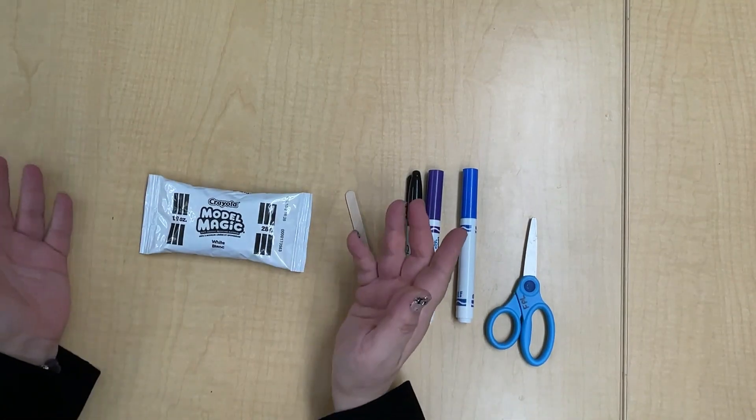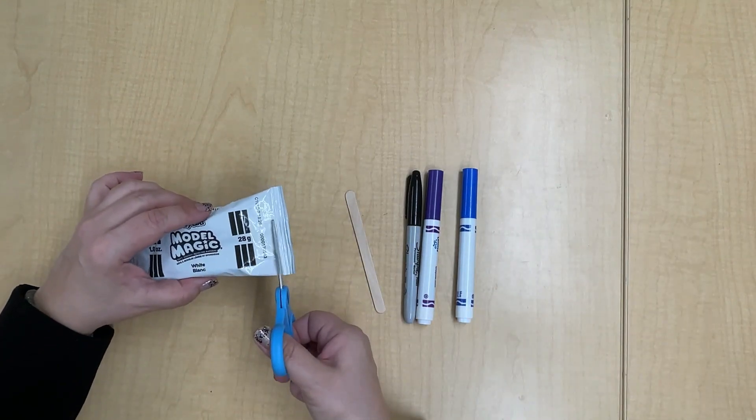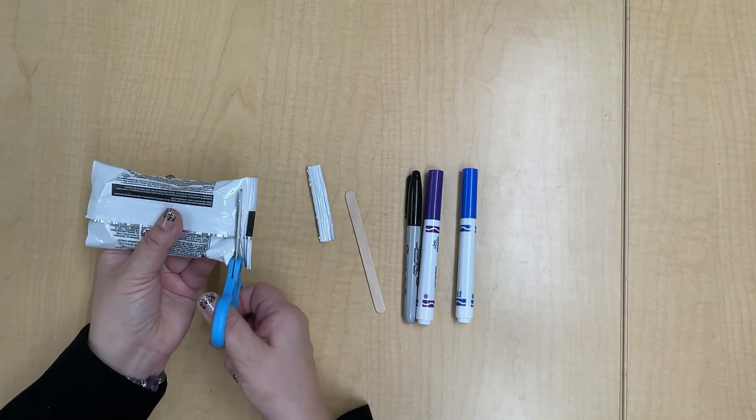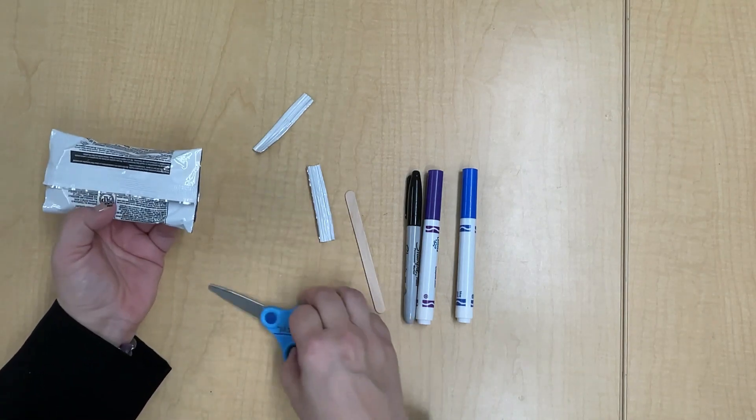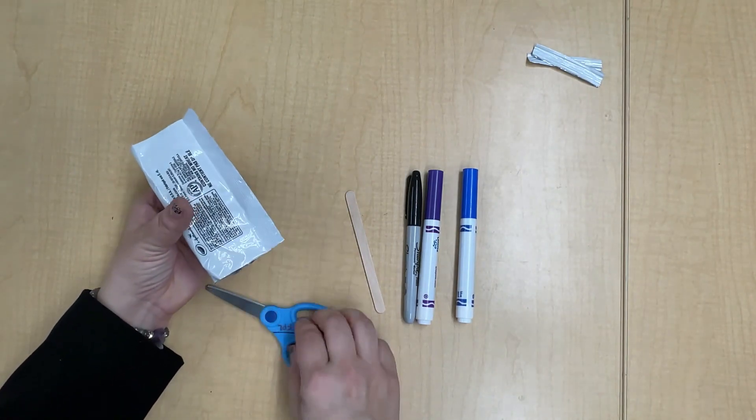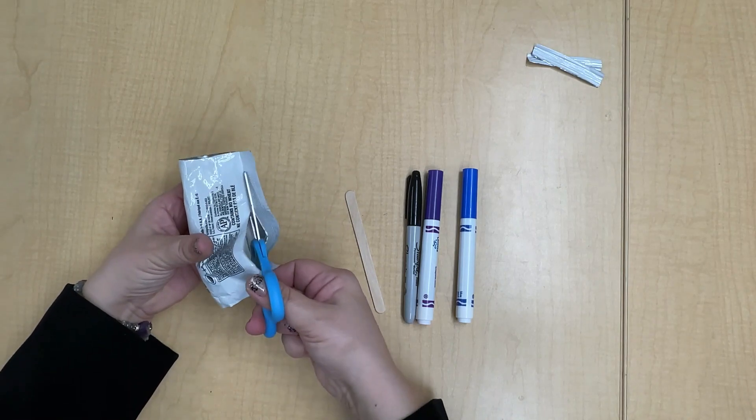So friends, I'm going to show you a special way to open your Model Magic. We are going to just cut off one end and the other end. And then lift this up and just cut along here.